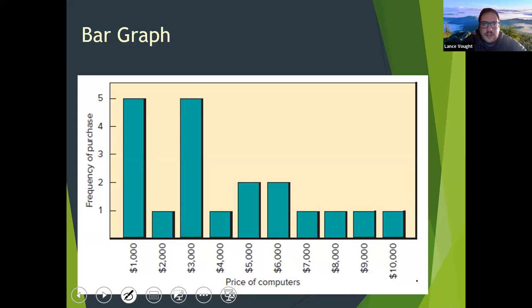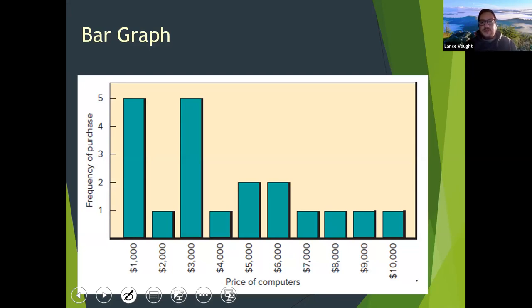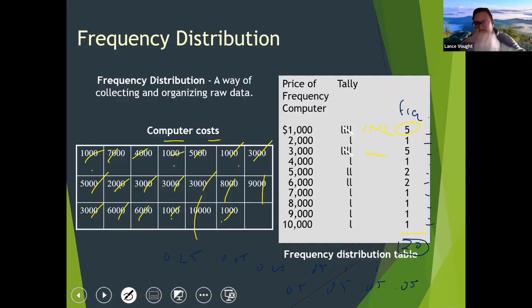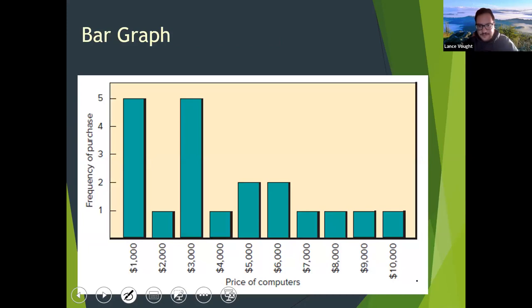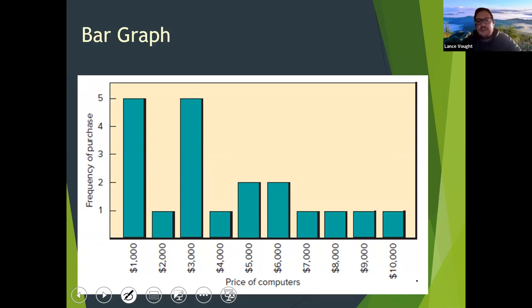You could convert this to a bar graph where the vertical axis shows the number of times a computer cost appeared, and the horizontal axis shows the actual prices. You could also change the scale of the vertical axis to show the percentage of total observations — so 25%, 5%, 25%, 5%, 10%, 10%, 5%, 5%, 5%, 5%. When you add it all together you should get 100% of the total observations.